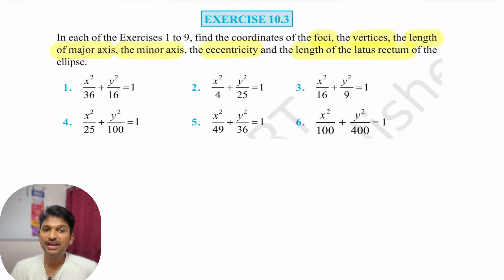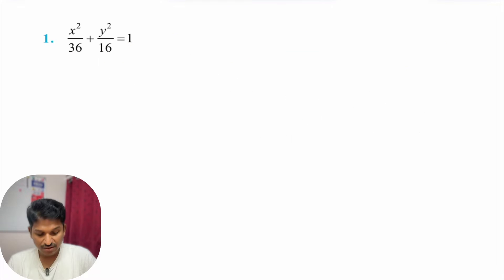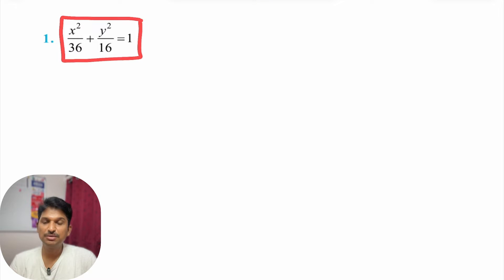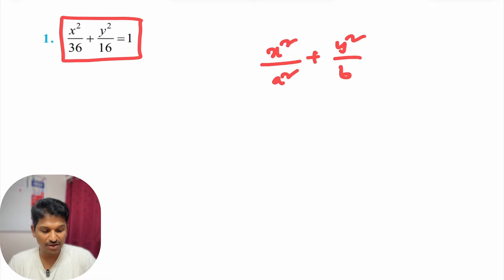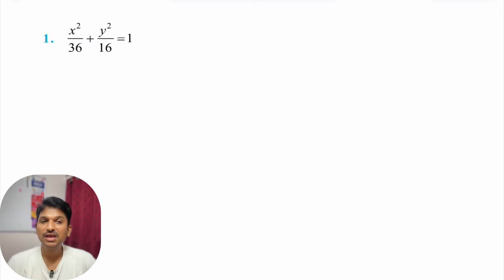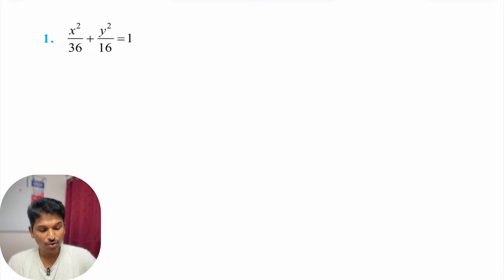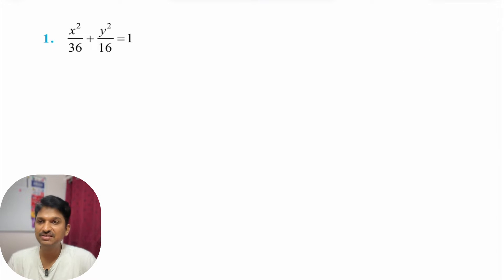In these 6 problems, I will do any 3 problems and I want you to try the other 3. First, in all these problems, you need to identify which type of ellipse it is — first type or second type. In the first type, a is greater than b. In the second type, a is less than b. You need to decide that first.